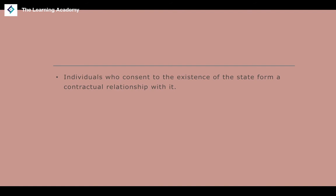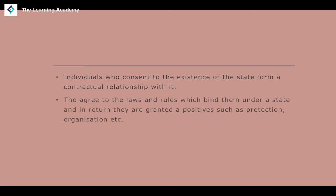In return, individuals are granted positives such as protection, organization, and allocation of resources. In contract law terms, this is called consideration — you get something for something else. An agreement takes place between the people and the state: you give up something and receive something in return. That is the idea of the social contract.